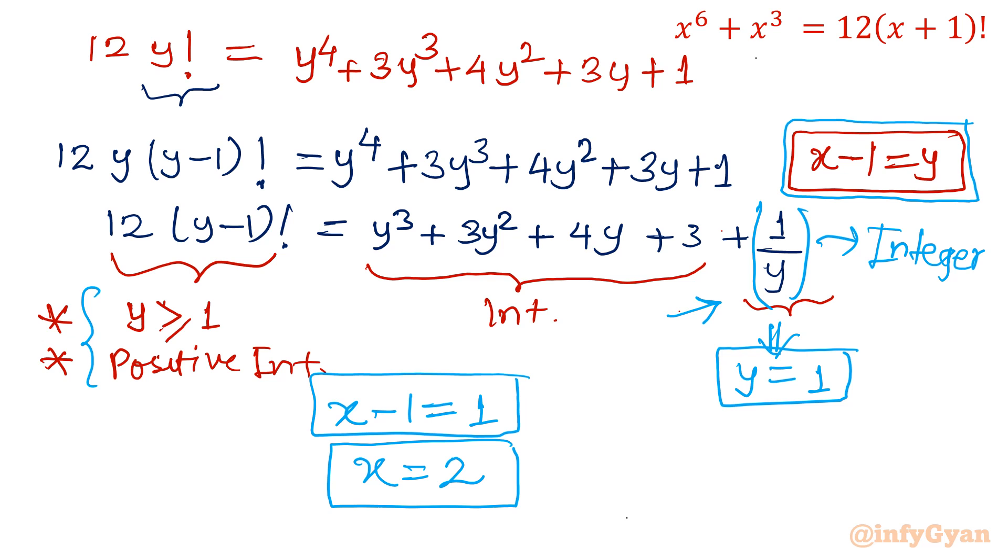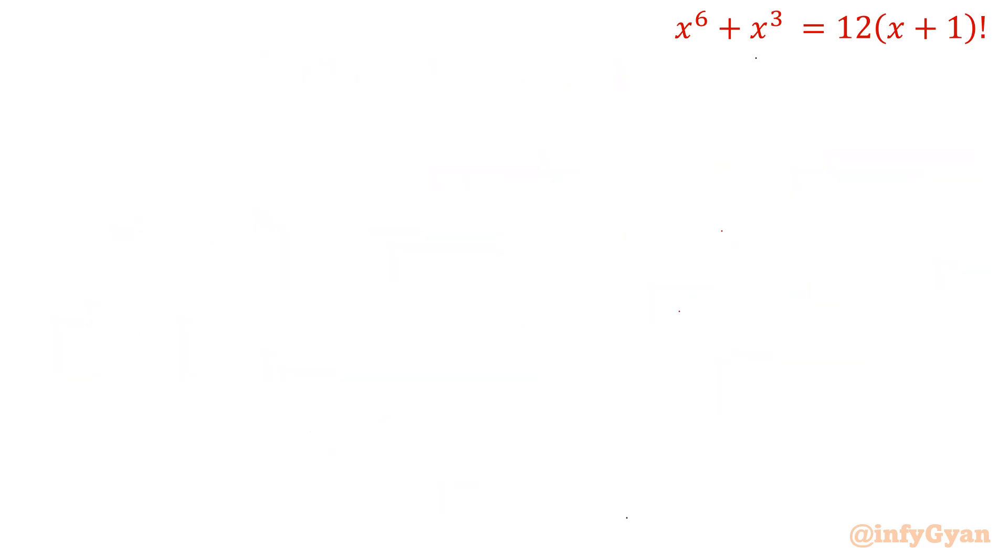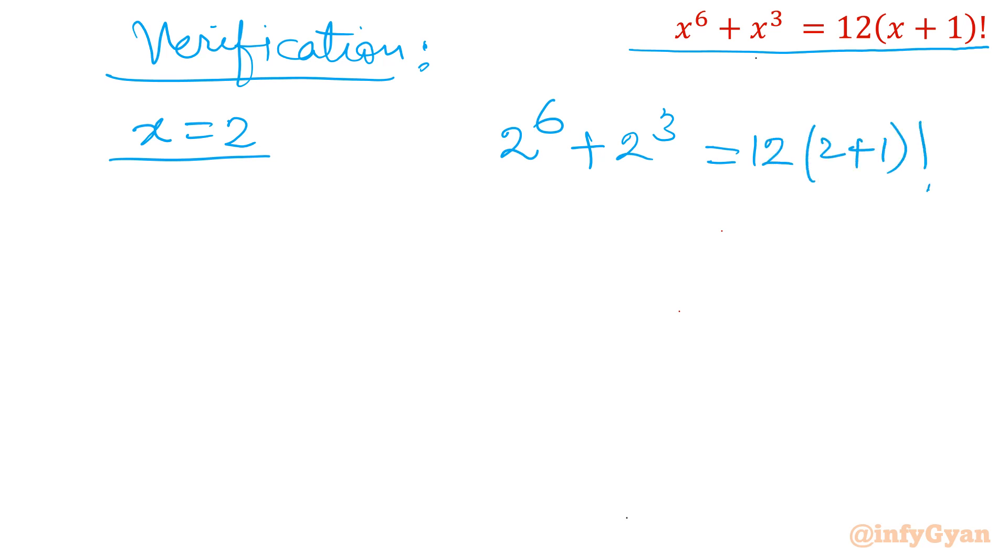Let us verify the value x equal to 2. Verification: 2 power 6 plus 2 power 3 equal to 12 times 2 plus 1 factorial. So 2 power 6 is 64 plus 8 equal to 12 times 3 factorial. This would be 3 factorial is 6, so 72 equal to 72. That means it is 2.